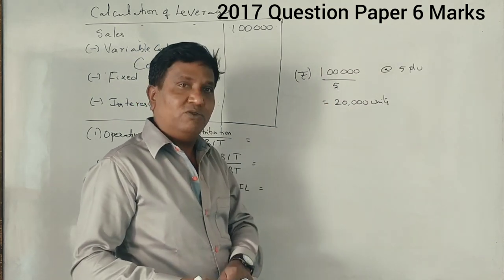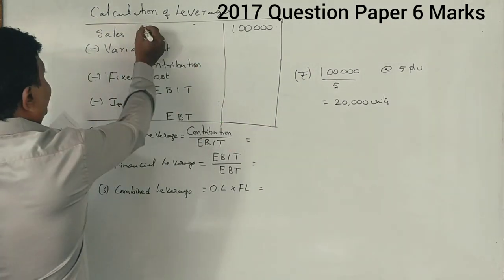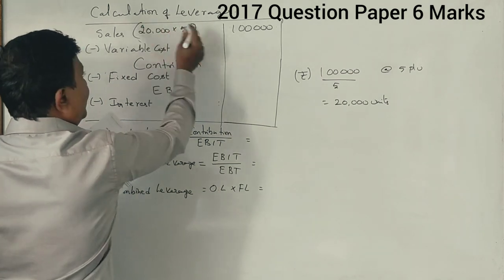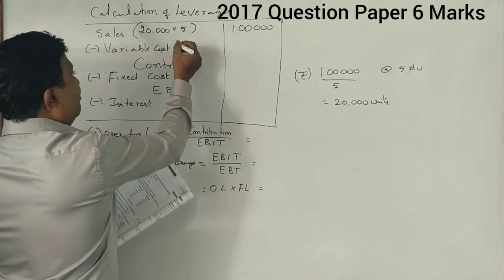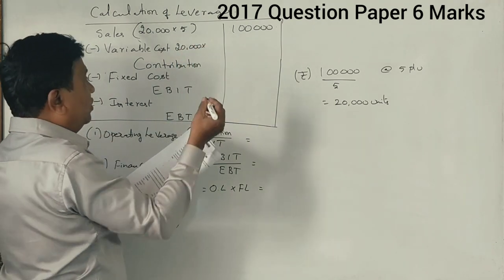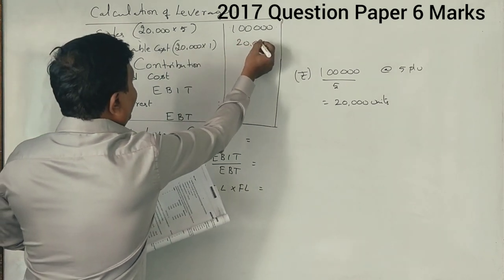See, this is the crux of this question. So now here we sold 20,000 units at 5 rupees. That's how we got 1 lakh rupees. And variable cost is 20,000 units into 1 rupee per unit. Now 20,000 rupees.